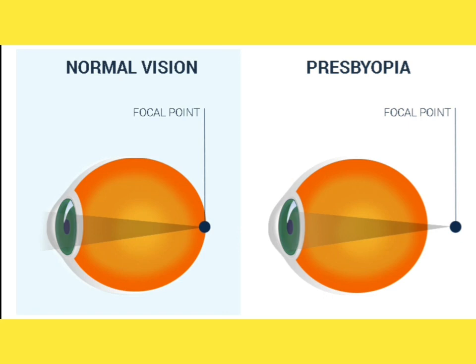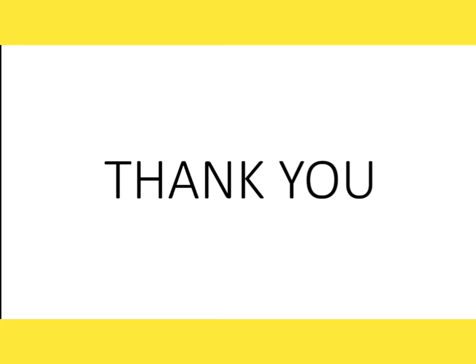Presbyopia is not a refractive error — it is a physiological condition where the lens zonules and ciliary muscle lose their ability to accommodate. When you need to read a near object, the lens cannot properly change its shape, so light rays get focused behind the retina. A plus or convex lens placed in front of the eye moves the focus onto the retina so you can see near objects clearly. That's all — thanks for watching, please like the video, subscribe to the channel, and hit the bell icon for notifications.